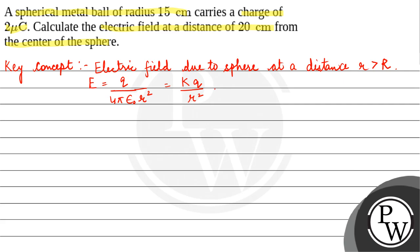Now according to the question, you have a sphere with radius 15 cm, charge 2 micro coulomb, and you have to find the electric field at a distance r = 20 cm from the center of the sphere.